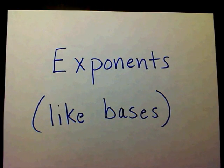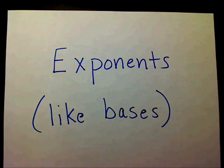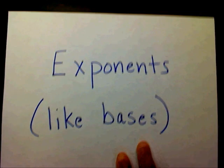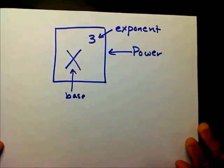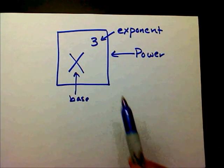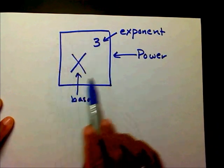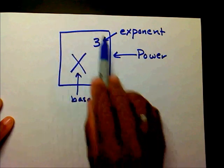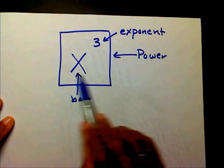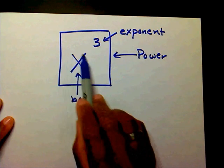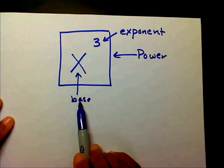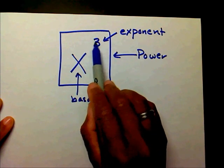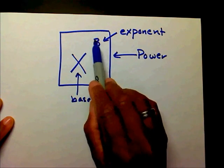Today we're going to multiply exponents with like bases, and before I get started I just want to do a short review on exponents and bases. This entire piece in this square is called a power. This big number at the bottom is called the base, and the little number at the top right of the base is called the exponent.